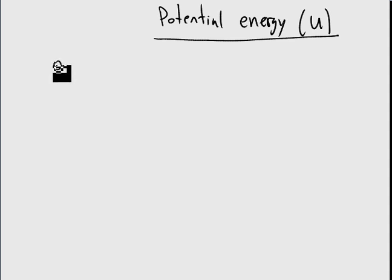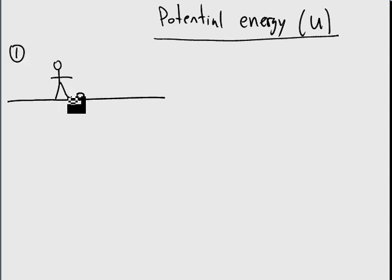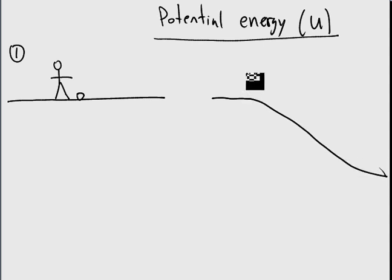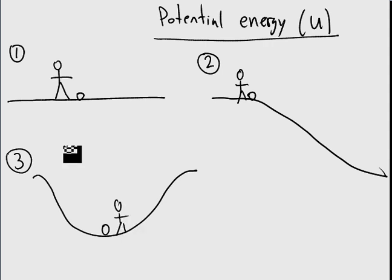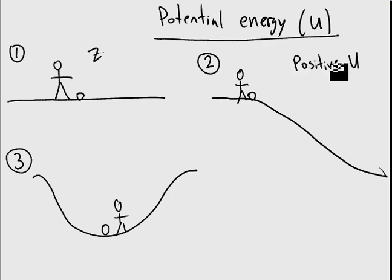I want you to imagine someone playing soccer, kicking a ball. We have three different people: a person on flat ground, a person playing on a hill, and a person playing in a ditch or a well. These three situations will present us with our positive potential energy, our zero potential energy, and our negative potential energy.